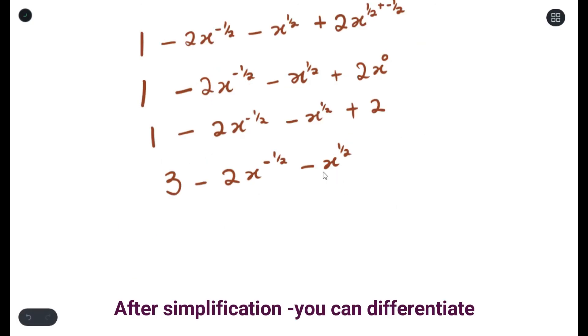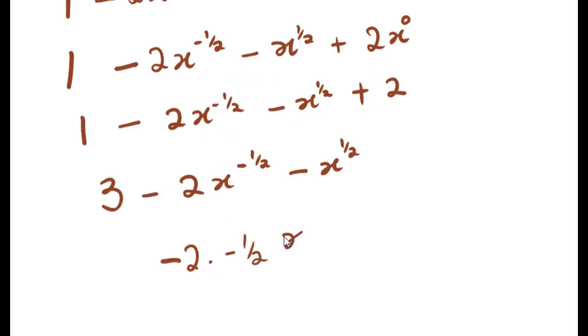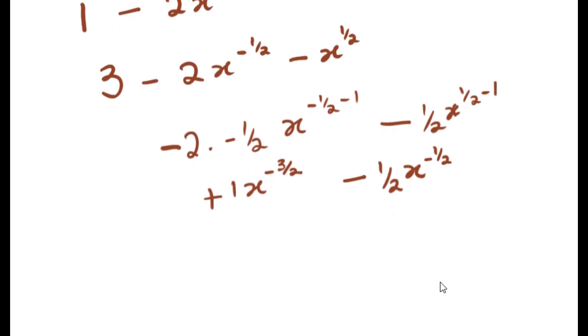We've simplified as far as we can get, so with this we can now differentiate. Now since we cannot leave our answers in negative exponents, we will move them to the denominator. That's it.